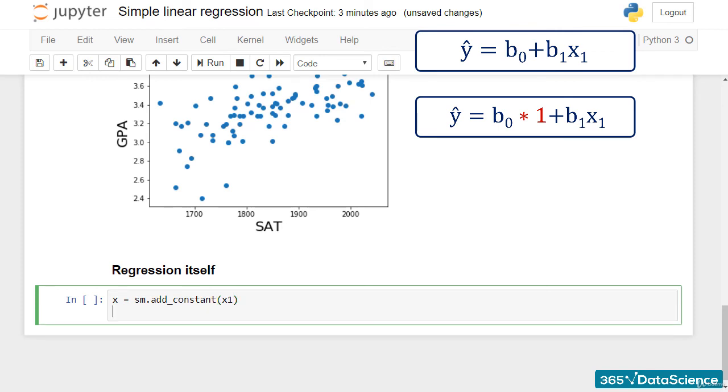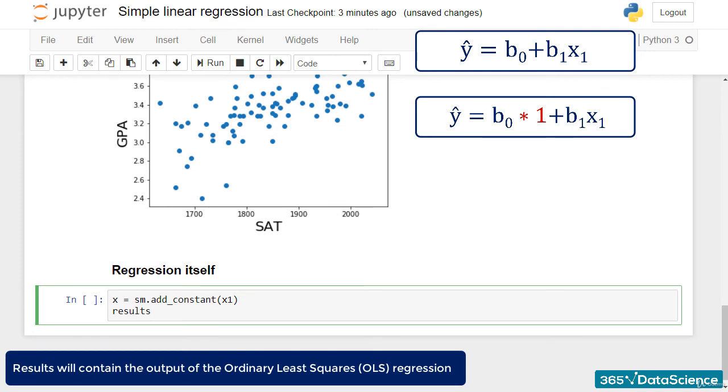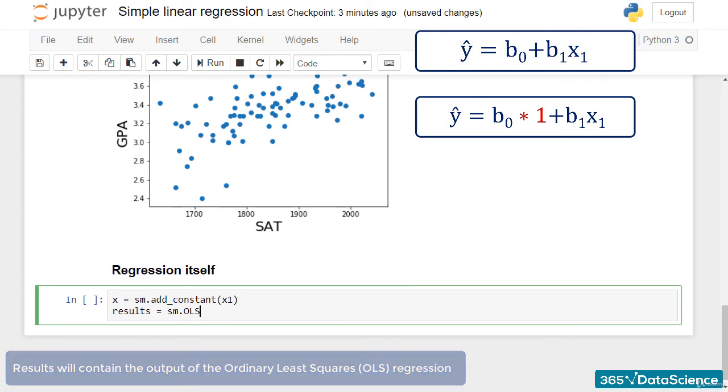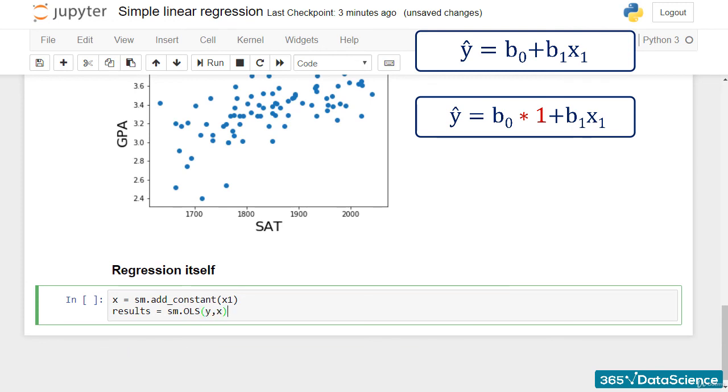Right after we do that, we will create another variable named results, which will contain the output of the ordinary least squares regression, or OLS. As arguments, we must add the dependent variable y and the newly defined x.